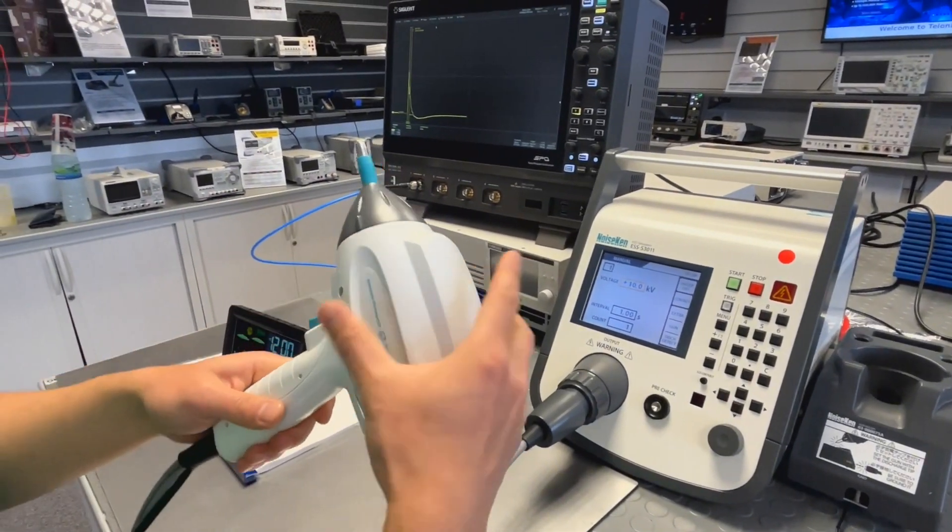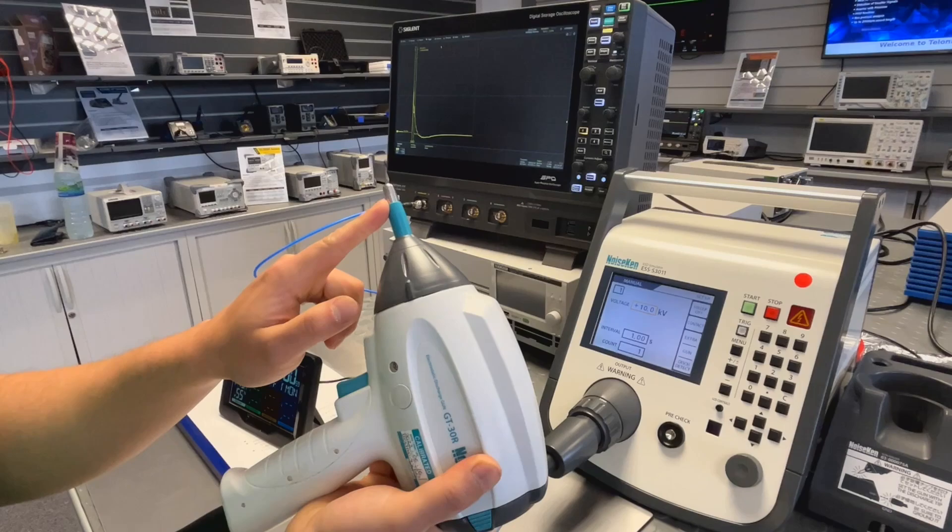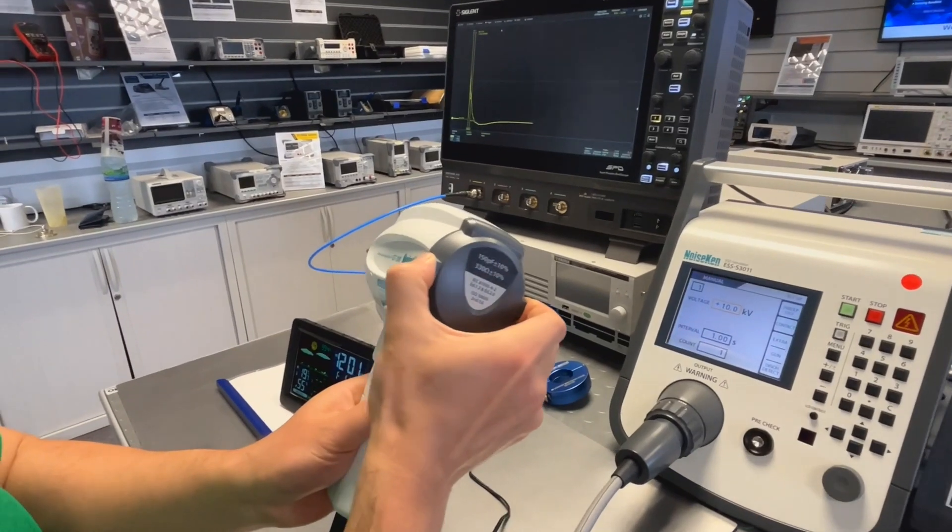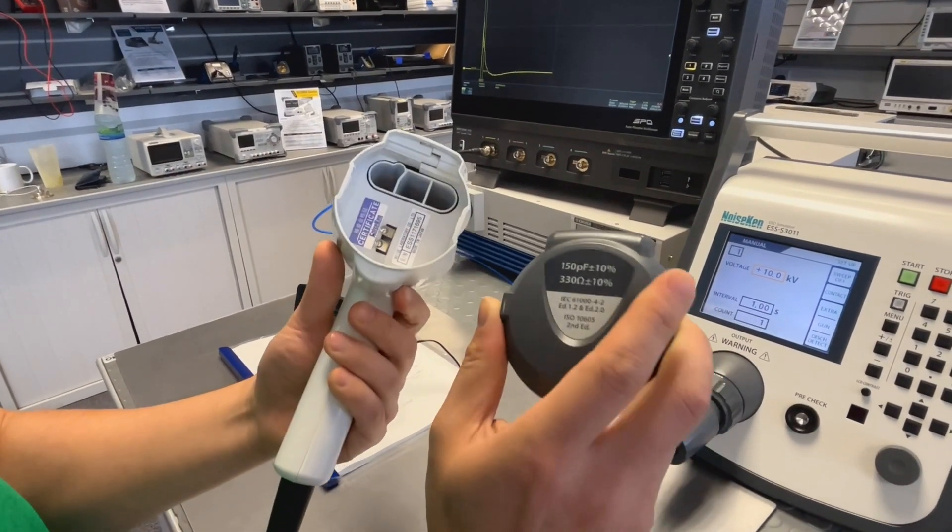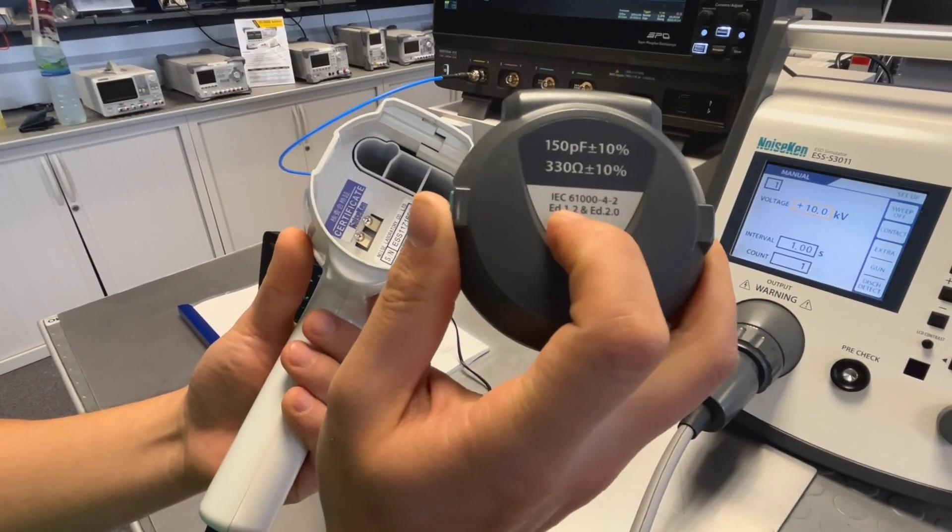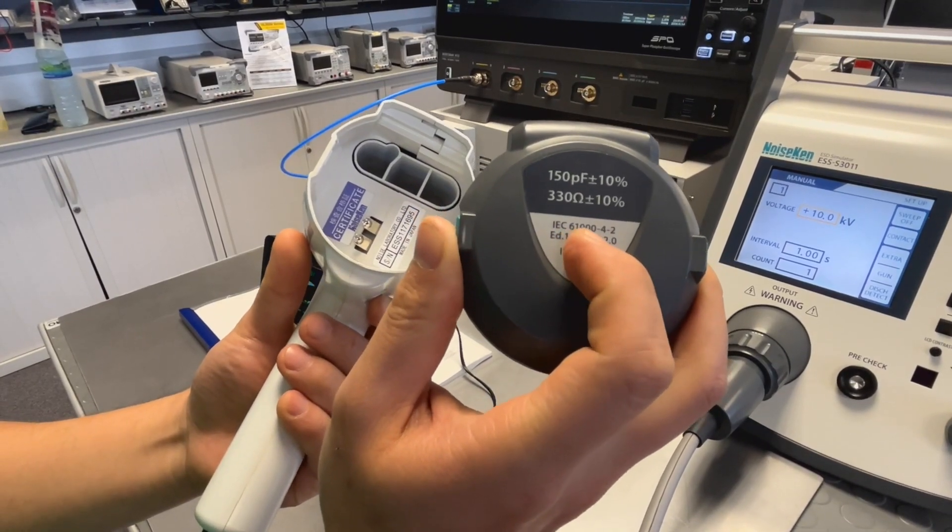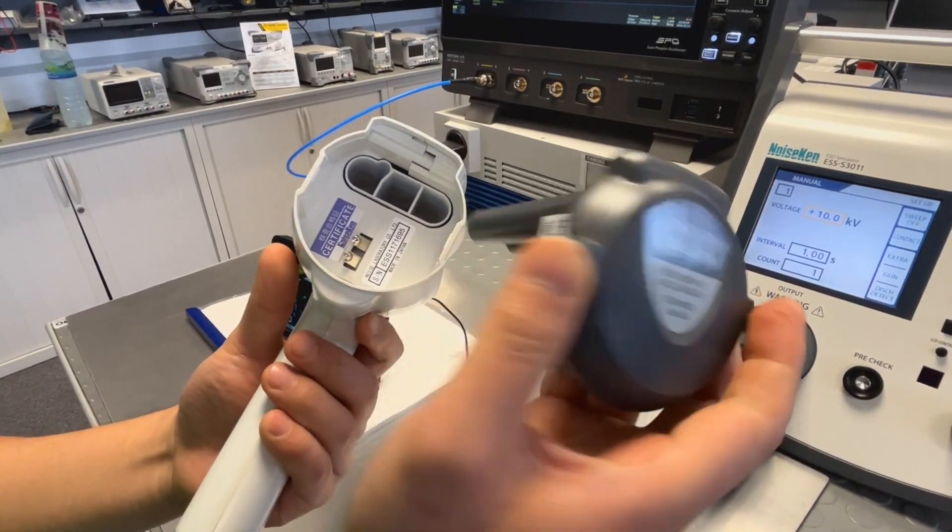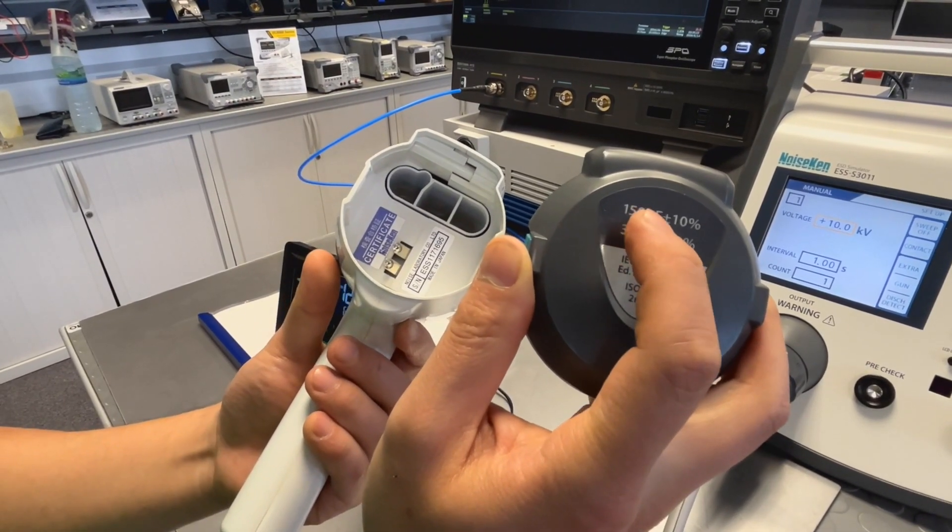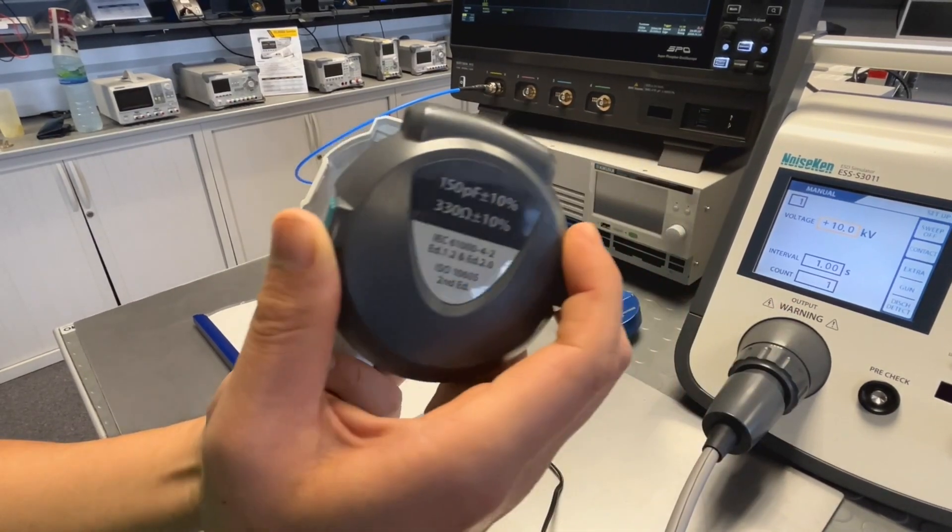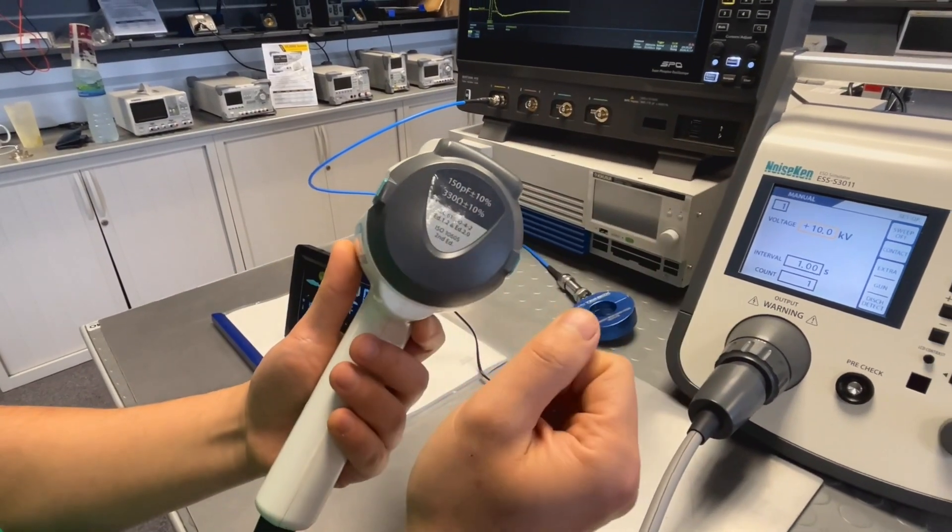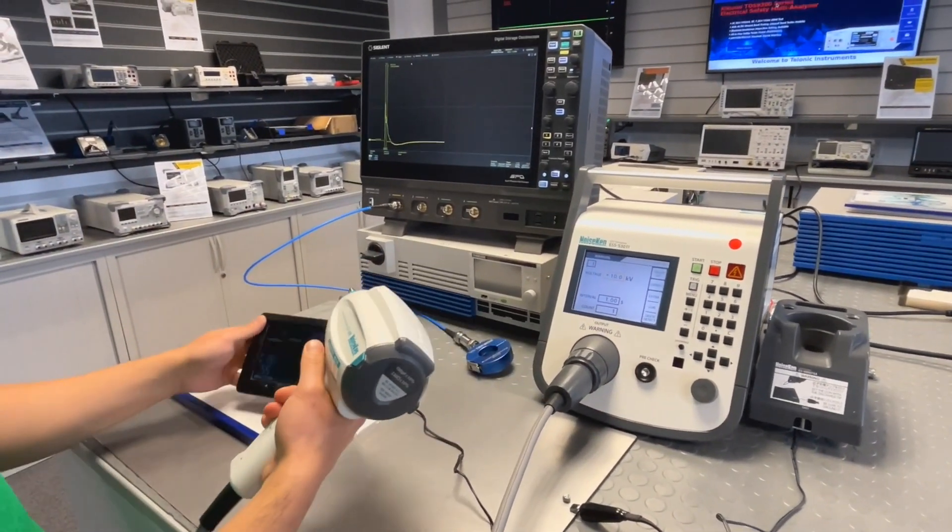As you can see from the ESD gun, I chose the tip called the air discharge tip, so it's a round shaped tip. On the back, this is interesting and the first time I saw it in an ESD gun, you can change the RC discharge network by simply doing this. Currently we have the IEC 61000-4-2 RC network with resistors of 330 ohms and capacitor of 150 picofarads. This would give me the IEC standard defined discharge.